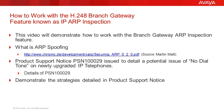This video will speak to the IPARP Inspection feature of the H248 Branch Gateway. This feature is part of the entire Branch Gateway product line except for the G700. The function of this feature is to prevent a denial of service attack known as ARP spoofing.